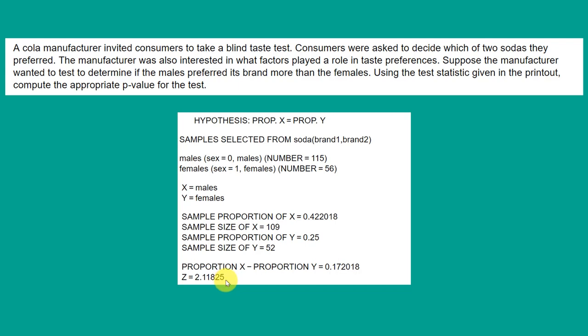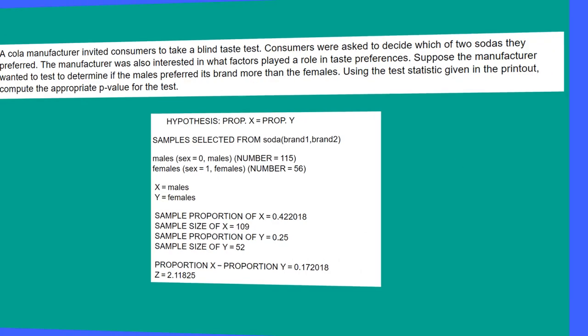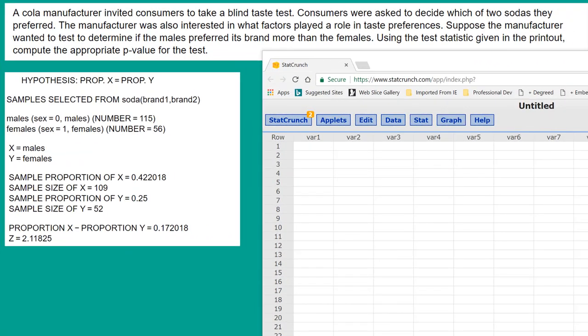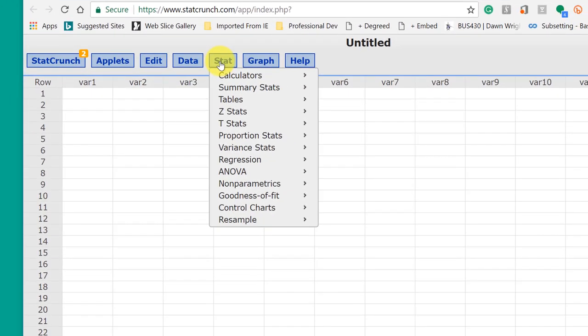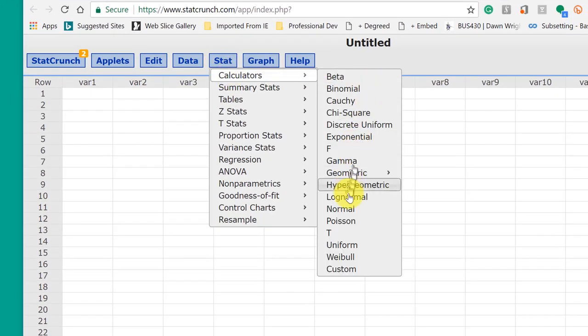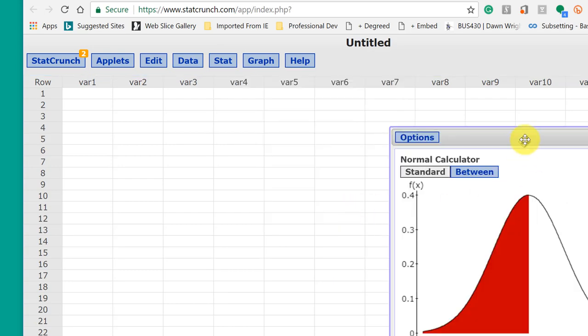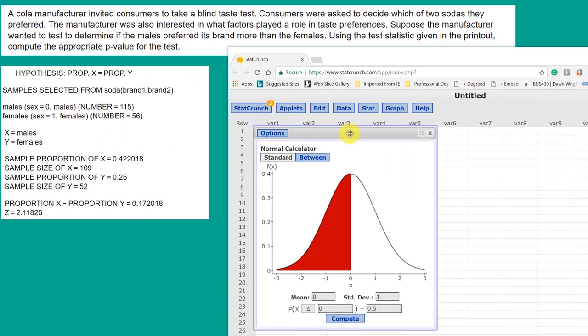That's all we need to solve this problem. We're going to call up StatCrunch, and I'll show you how to do this very quickly. I have StatCrunch open, and all we need to do when we are given a Z statistic is go into Stat, Calculators, Normal to bring up our normal calculator.